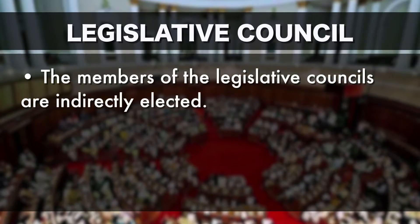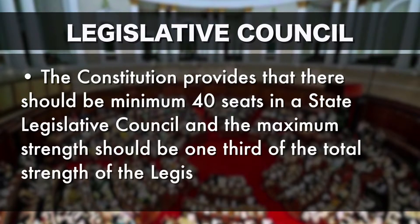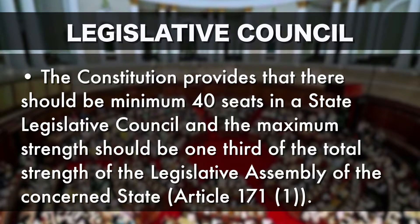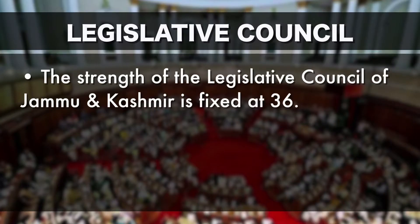Now let's discuss the composition of the State Legislative Council. Only seven states are having State Legislative Councils. The members of the State Legislative Councils are indirectly elected, not directly elected like the State Legislative Assembly. The Constitution provides that there should be a minimum of 40 seats in a State Legislative Council, and the maximum strength should be one-third of the total strength of the State Legislative Assembly of the concerned state. However, Parliament is empowered to alter the strength of the Legislative Council of various states. The strength of the Legislative Council of Jammu and Kashmir is fixed at 36, which is less than the prescribed 40.